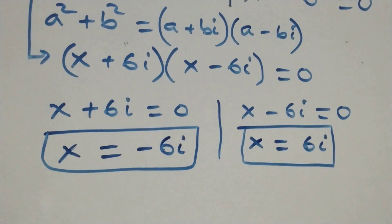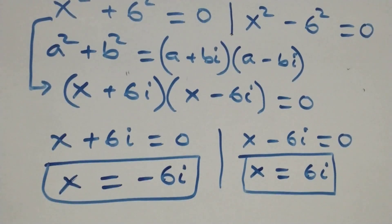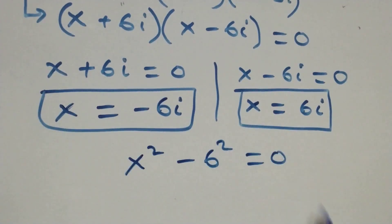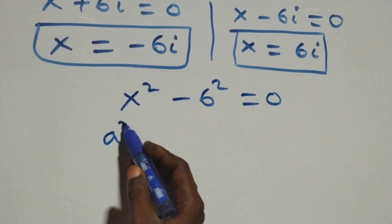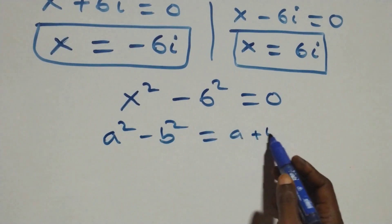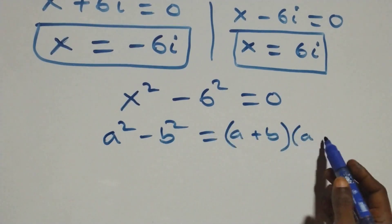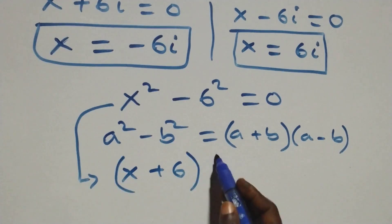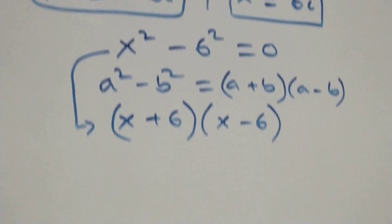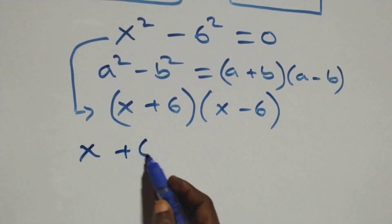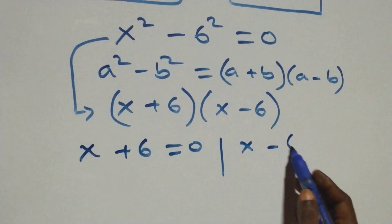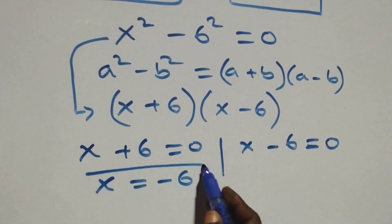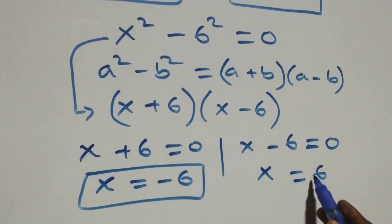Now solving the second case: x squared minus 6 squared equals 0. This follows the difference of two squares: a² − b² = (a + b)(a − b), which becomes (x + 6)(x − 6) = 0. So x + 6 = 0 or x − 6 = 0, giving x = −6, which is a real solution, and x = 6, which is also a real solution.